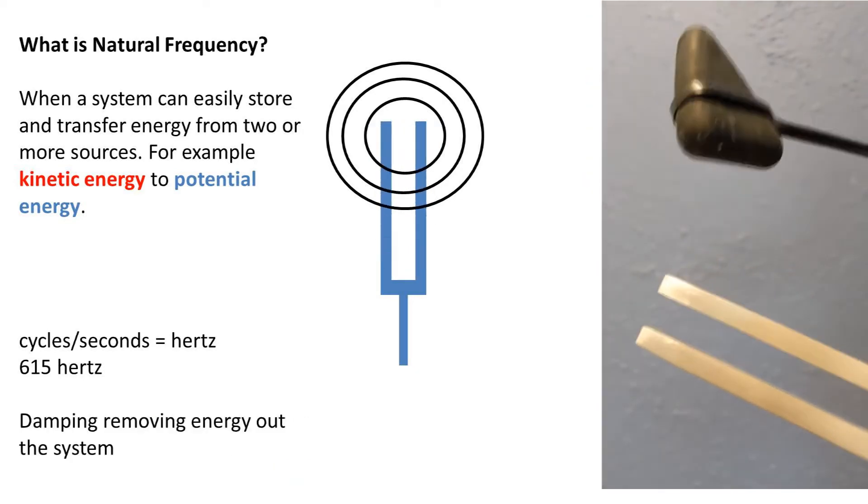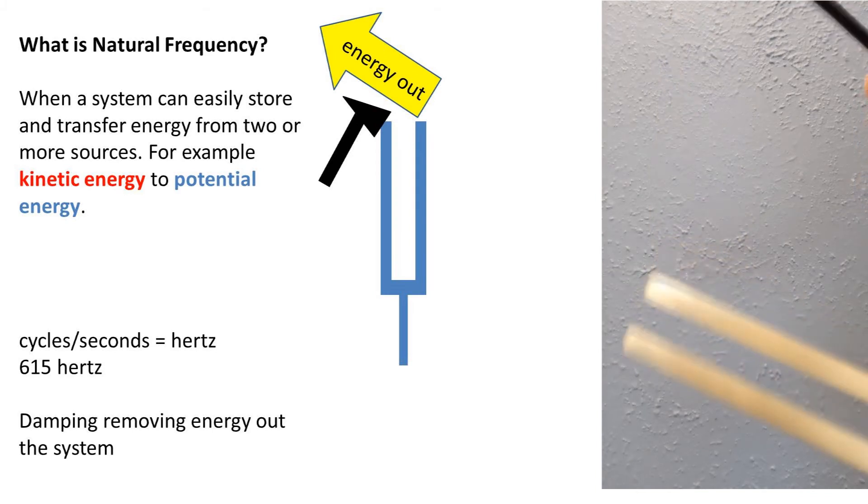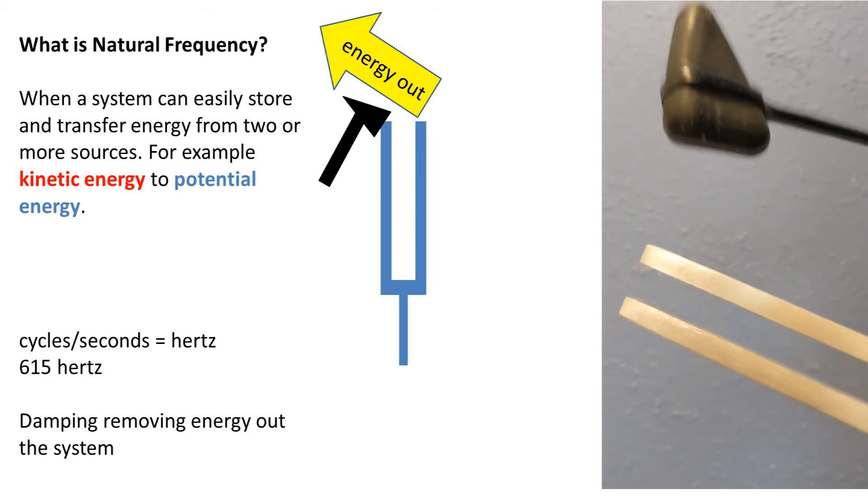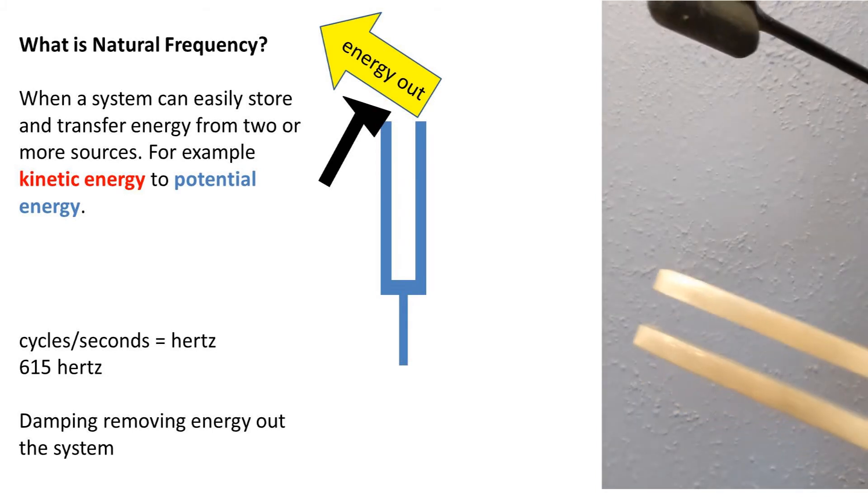Now let's talk about damping. Damping is where you add another object or influence to the system to dissipate or remove the energy out of the system.